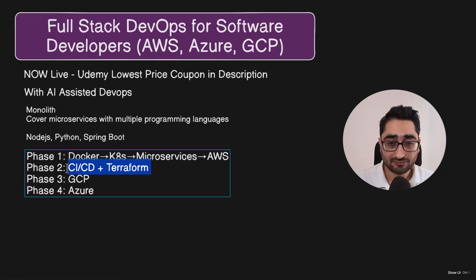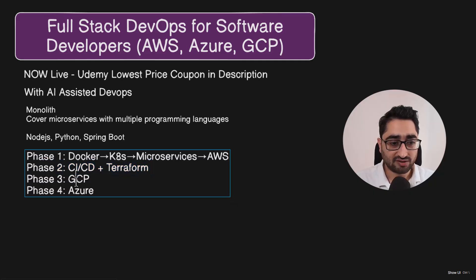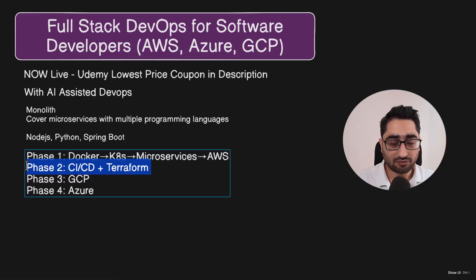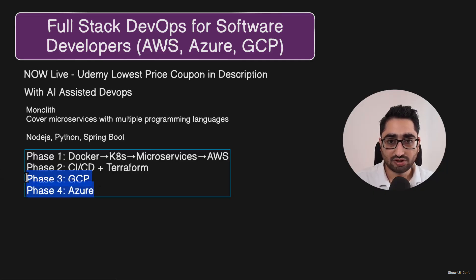Phase 2 will cover CI/CD and Terraform, and I plan to release that in the next two to three weeks. I'll post an announcement to course students when that happens. After that, we go multi-cloud — CI/CD and Terraform for AWS first, and then GCP and Azure. GCP and Azure will be released in the next one to two months.